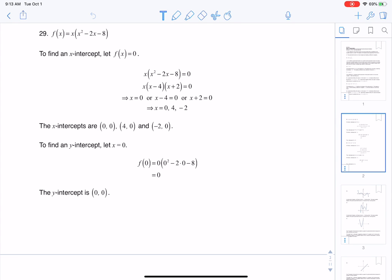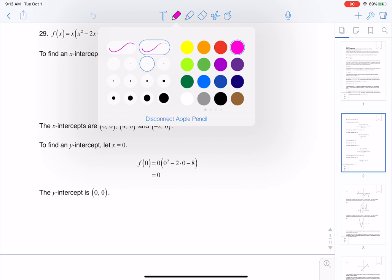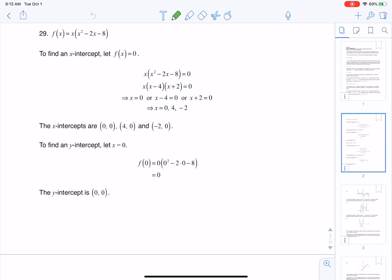So to find an x-intercept, you let y equal 0, and to find a y-intercept, you let x equal 0. Let me just write that out real quick. So if I ever want to find an x-intercept, let your function 0 out, let the other letter 0 out, and if you want to find the y-intercept, you're going to let x equal 0.